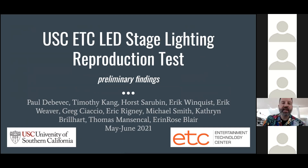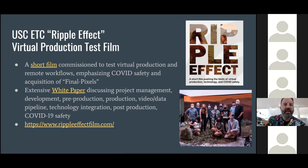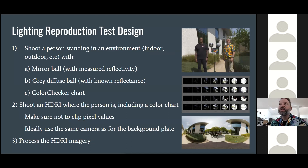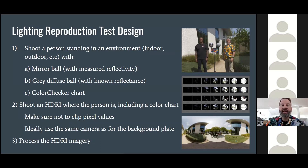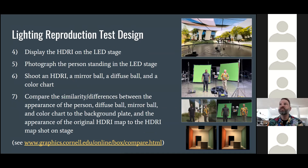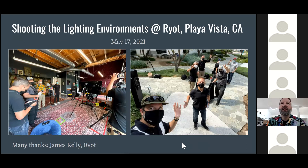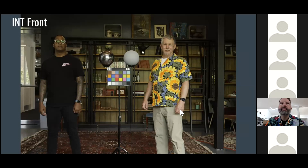I'd like to talk about the results of the lighting reproduction test we did with USC ETC. The design was to take a couple of real people and some lighting reference objects to a few real-world locations, photograph what they look like in those locations, record the lighting with high dynamic range imaging, and then see how well a virtual production stage can reproduce that lighting out of the box. We were lucky that Riot opened up their internal library room for our two interiors and let us shoot outside next to the building for the two exteriors.